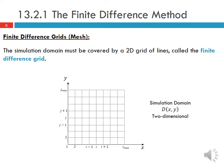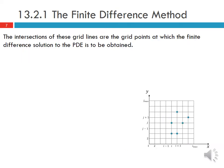The simulation domain must be covered by a 2D grid of lines called the finite difference grid. For example, this is the simulation domain for a two-dimensional problem. The intersections of the grid lines are called the grid points, at which the finite difference solution of the PDE is to be determined.